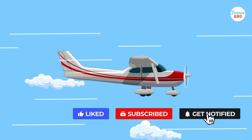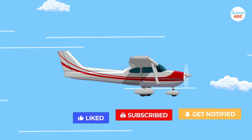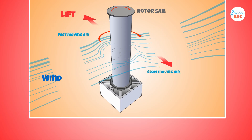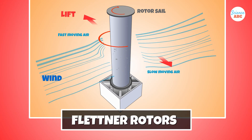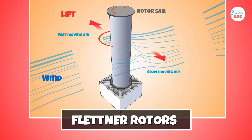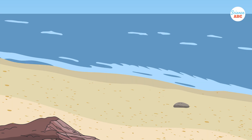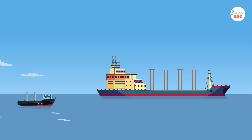The Magnus effect also isn't limited to sports. Pilots of small aircraft often have to account for it when flying through strong crosswinds. There are also devices called Flettner rotors, which consist of cylindrical rotating surfaces. These devices harness the Magnus effect to generate forces that aid in propulsion and stability on both ships and aircraft.